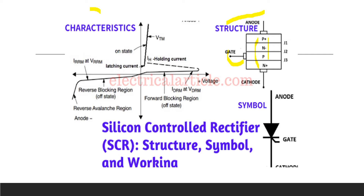All these properties are similar to the PNPN diode, except that we can control the current flowing from anode to cathode — which is initiated by applying positive potential to the anode and negative to the cathode — with the help of the gate, whose function was missing in the PNPN diode, which was a two-terminal device.